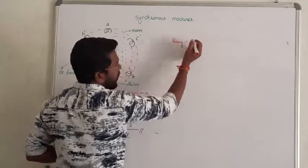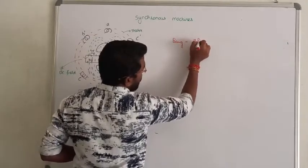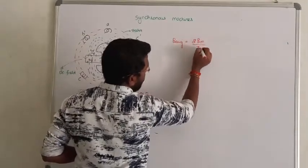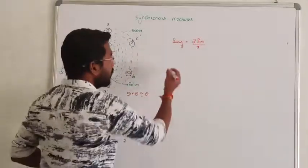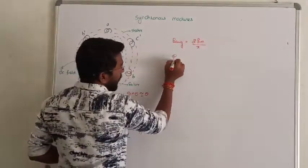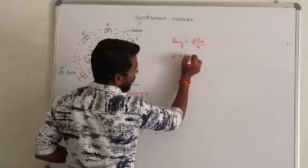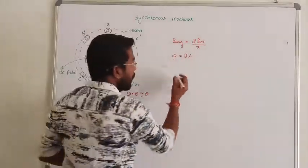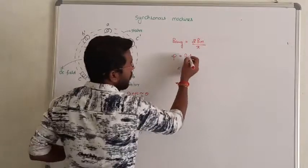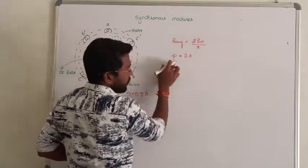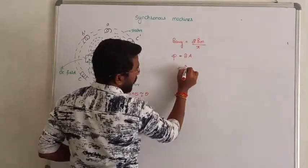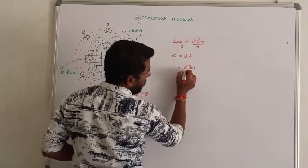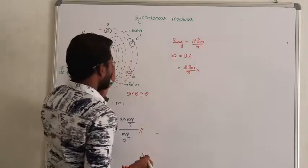The average flux density is 2 times maximum flux density divided by pi. Magnetic flux can be written as B times A, where A is the area. In a cylinder, B has value 2 times B_m by pi.